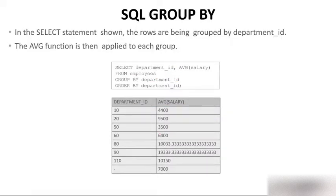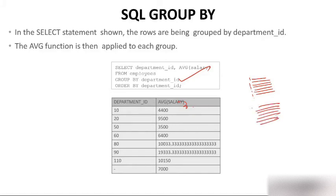In the SELECT statement, the rows are being grouped by department_id. The average function is then applied on each group. First we collect all employees of department 1, all employees of department 2, all employees of department 3, and then we apply the AVG(salary) function. So this is what we are actually doing with GROUP BY.